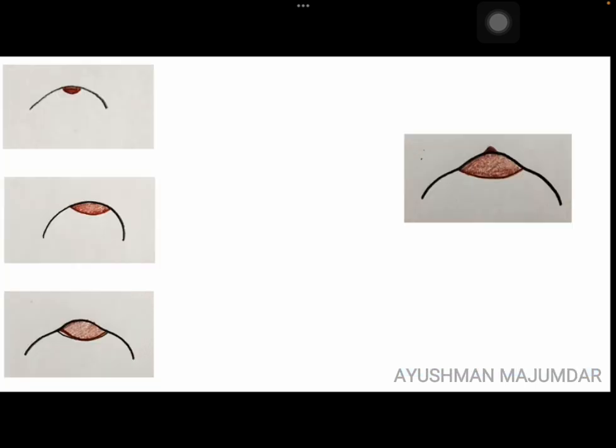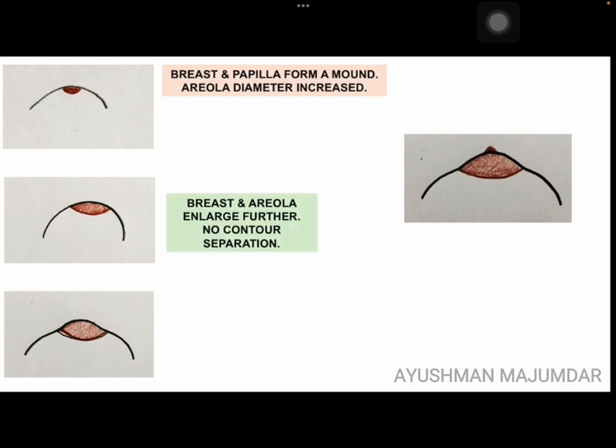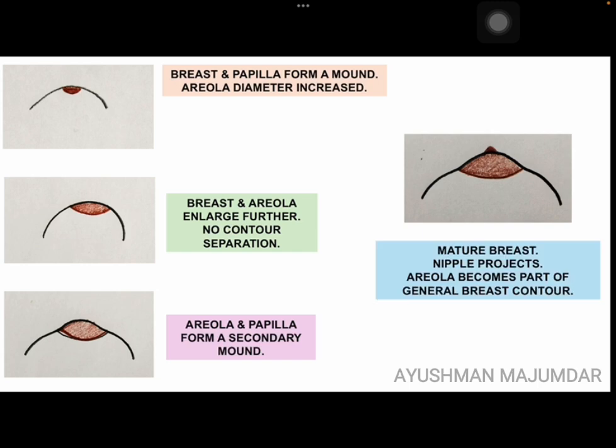Talking about the development of breast. In stage 1, we have got the pre-adolescent breast. In stage 2, we have got breast and papilla forming a mound, and the areola diameter is increased. In stage 3, breast and areola have enlarged further, and there is no separation of the contour. In stage 4, areola and papilla form a secondary mound. And in stage 5, the nipple is projecting out, the breasts have become mature, and areola now becomes a part of the general breast contour.